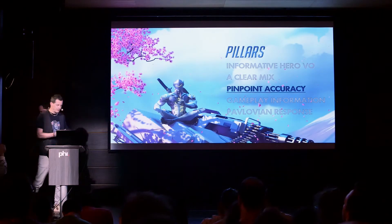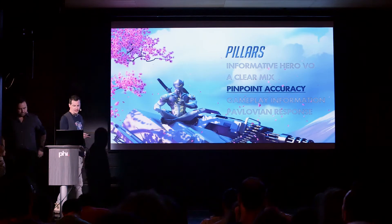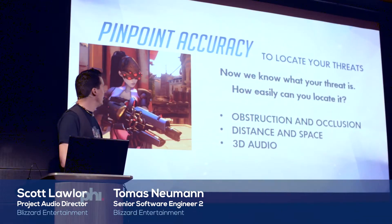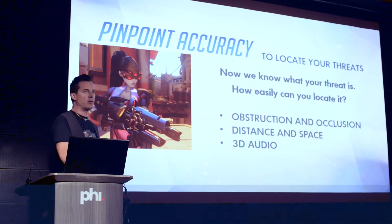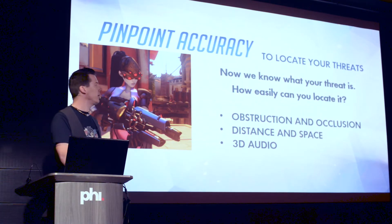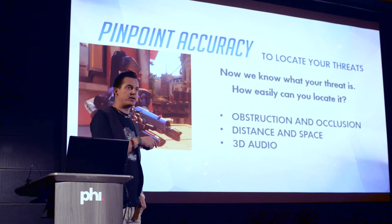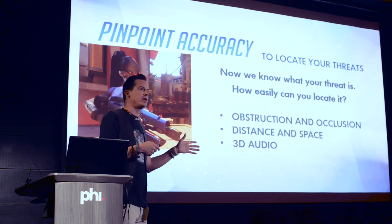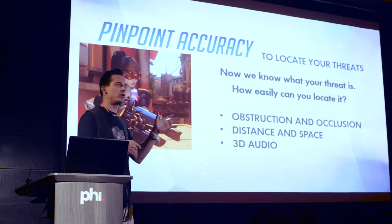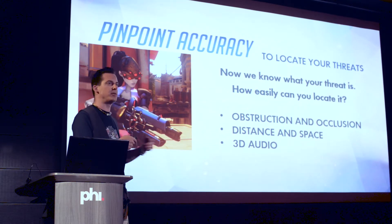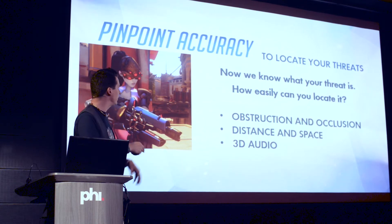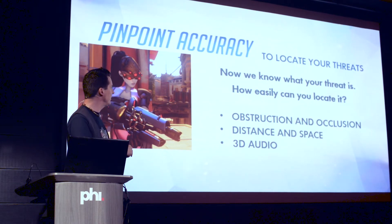So then we come to the next pillar, which is accuracy. We kind of hear what is important now, and we want to ask the question: how can we help the player — guide them where to look, where to go, how to anticipate stuff? We use these three tools: obstruction and occlusion, distance and space, and 3D audio.